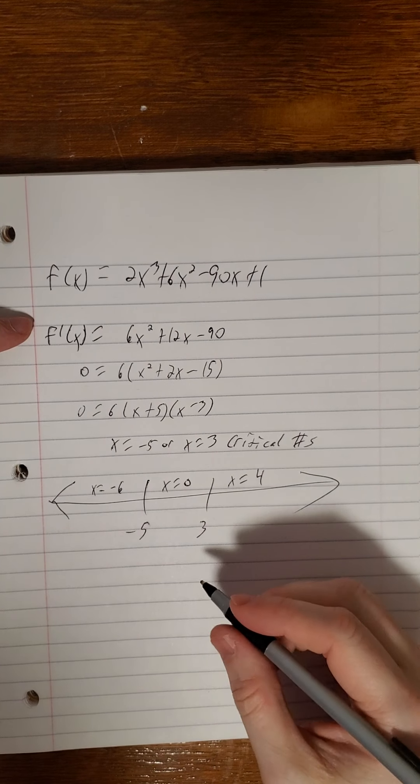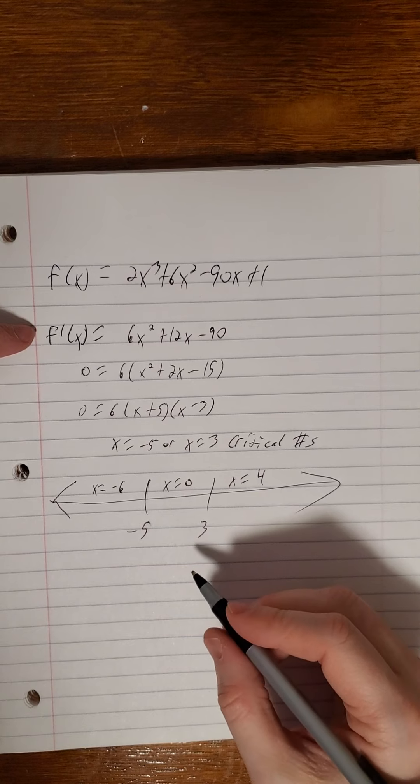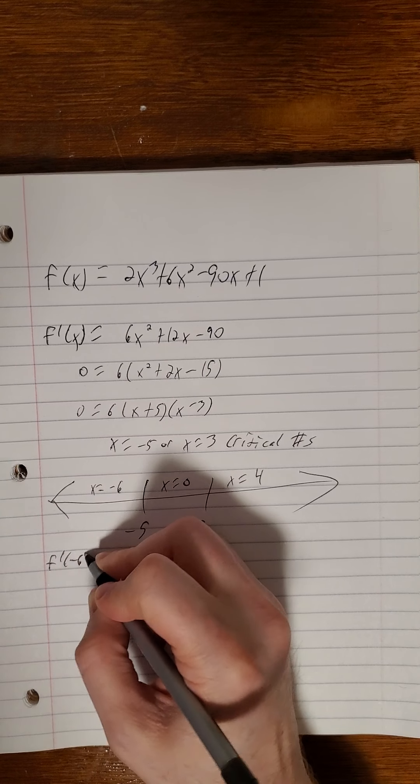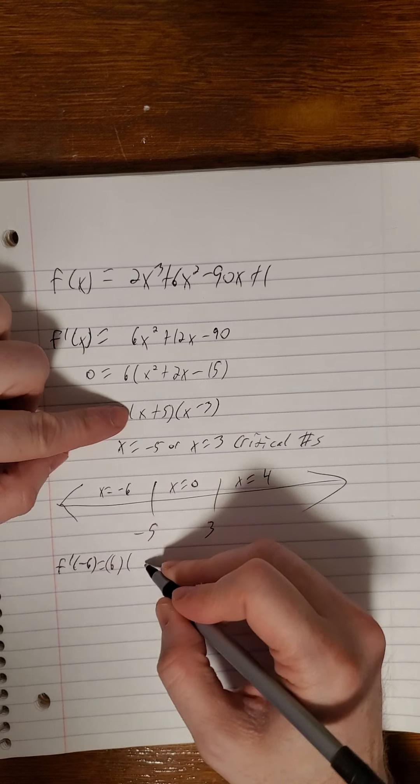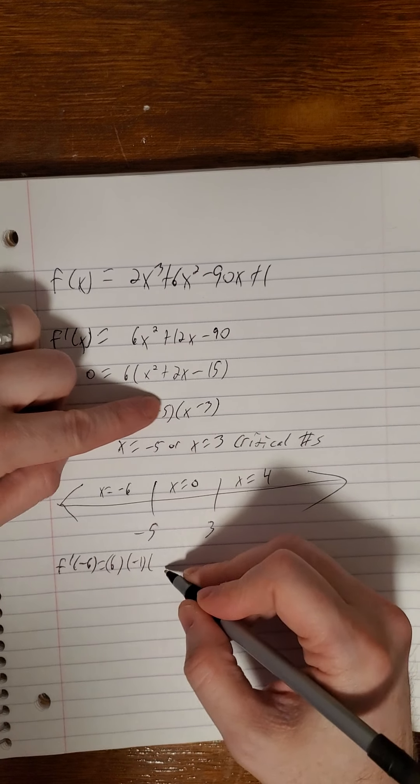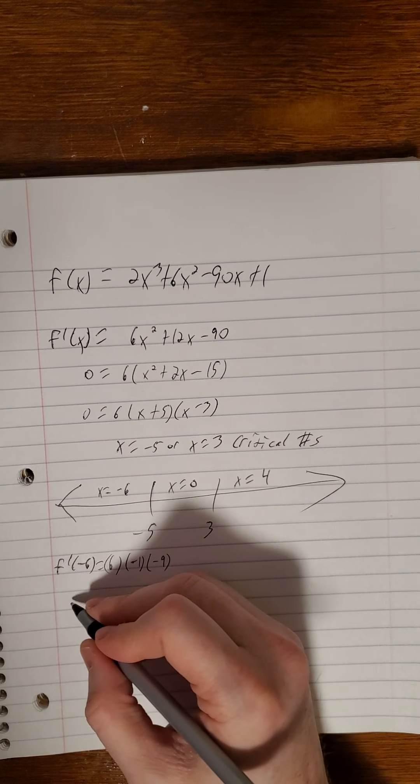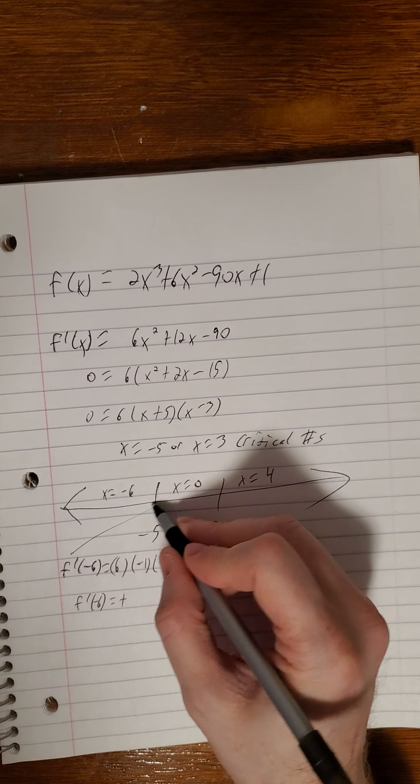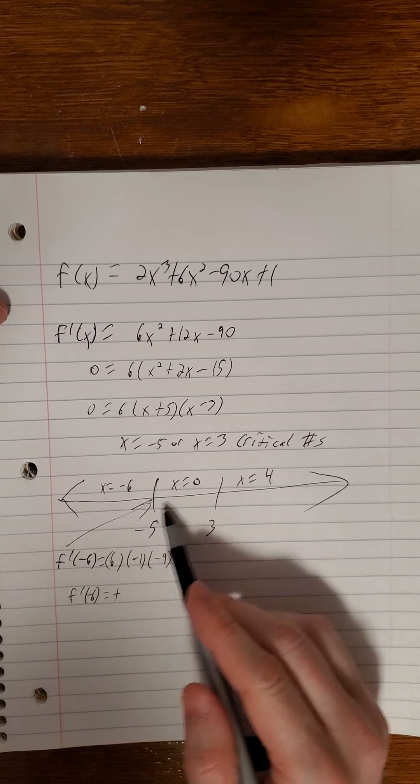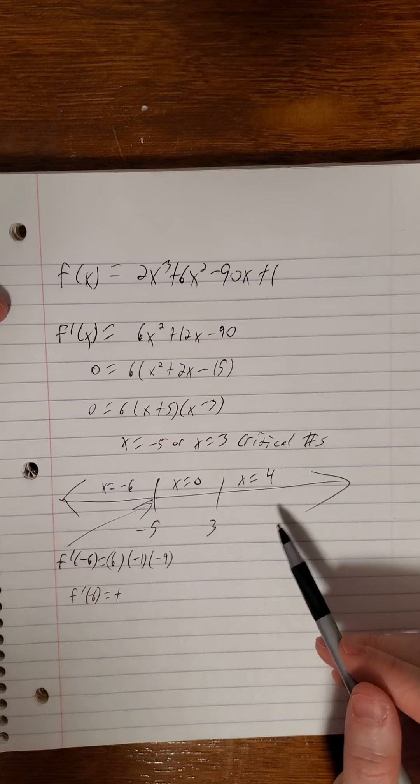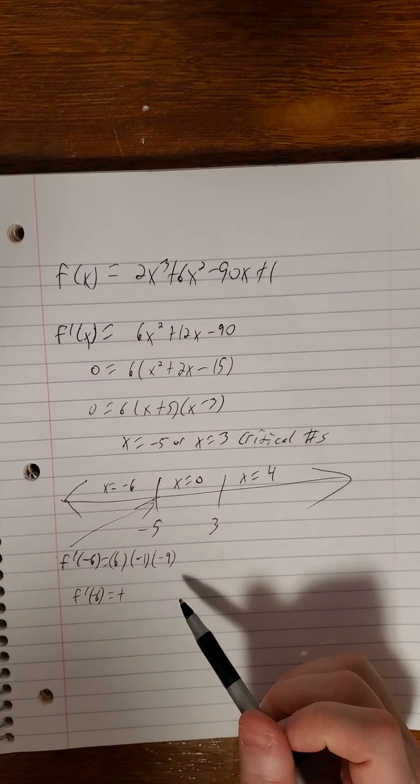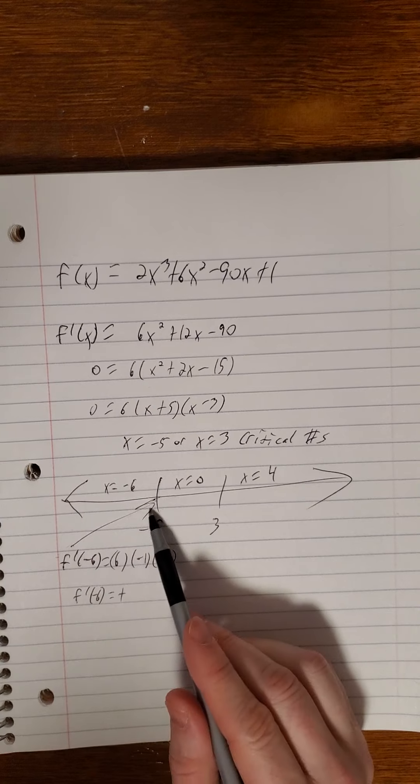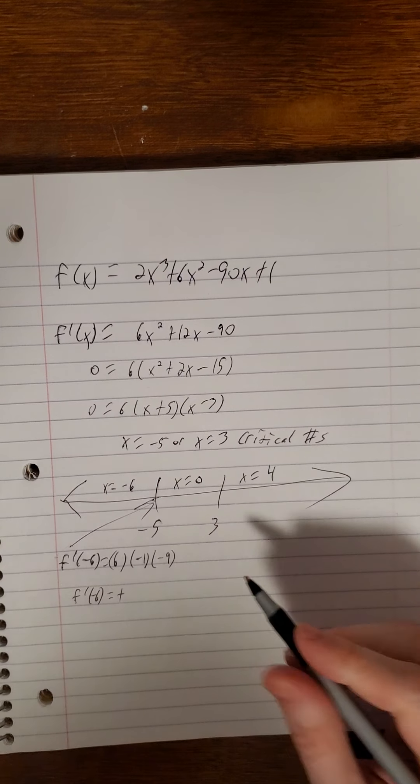For simplicity's sake, as far as figuring out if we're increasing or decreasing, I'm going to use the factor version of f prime when I test these out. So f prime of negative 6, we have 6 times negative 1 times negative 9. That is a positive. So I like to just kind of draw a quick little positive slope line or curve in that section. So it's not really representing exactly what it's doing in a 2D plane. It's just reminding me, okay, moving left to right, this graph is going up. Function values are getting bigger.